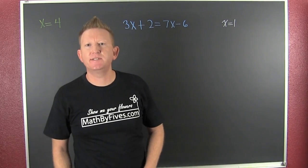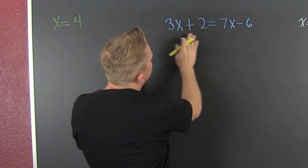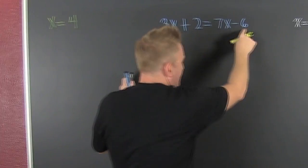Let's check and see if a value is a solution. What do I have? I have this linear equation. 3x plus 2 equals 7x minus 6.